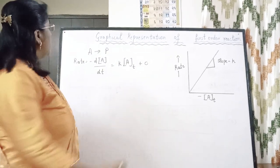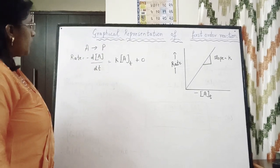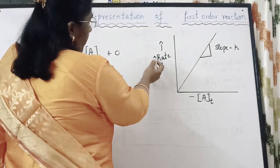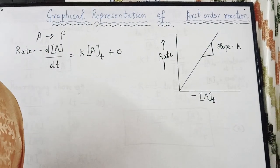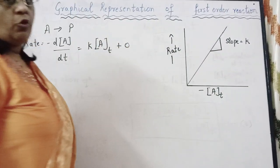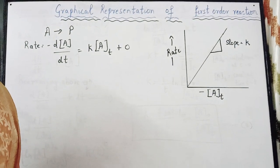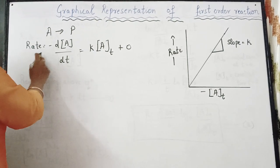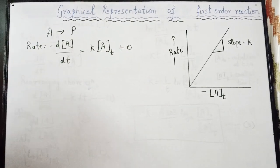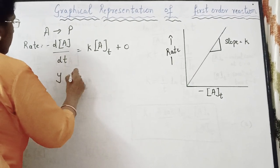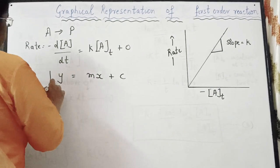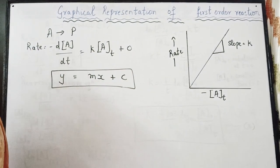Now let us study graphical representations of first order reaction. If we plot a graph of rate of reaction versus concentration [Aₜ], we get a straight line passing through the origin. The slope of this straight line gives us the value of K, where K = rate/[Aₜ]. The differential rate law is: rate = -d[A]/dt = K[Aₜ], which resembles the equation of a straight line Y = Mx + C passing through the origin.